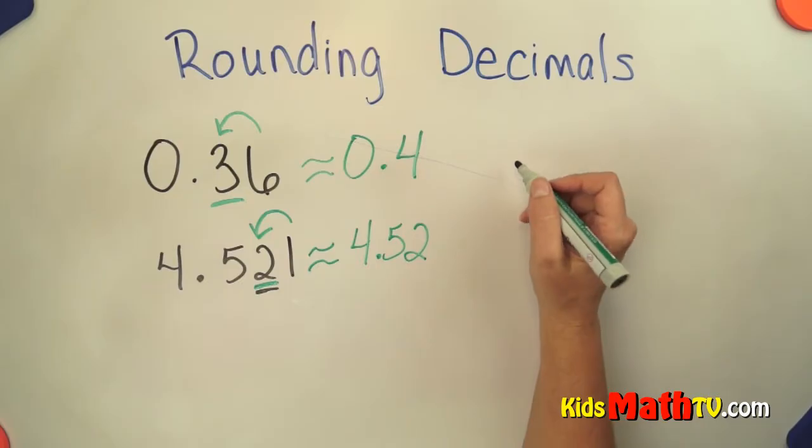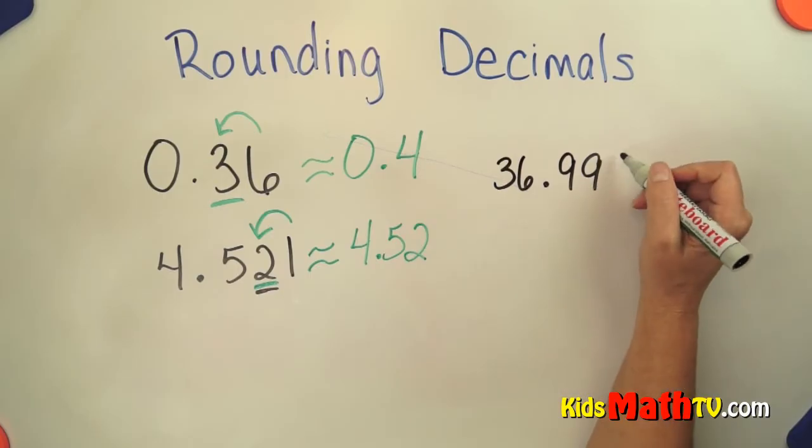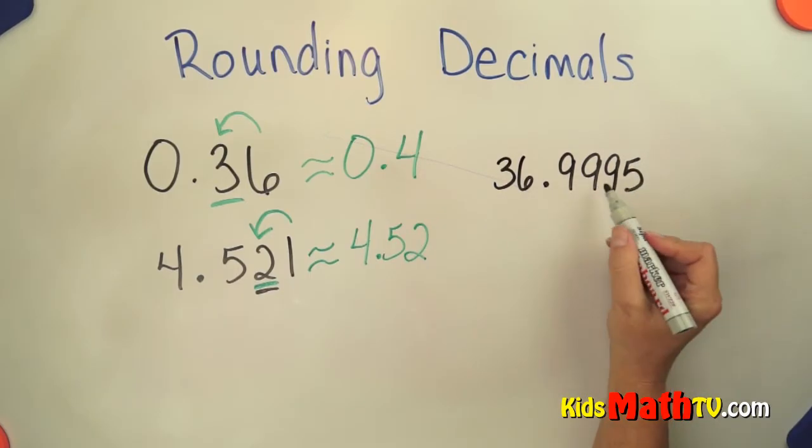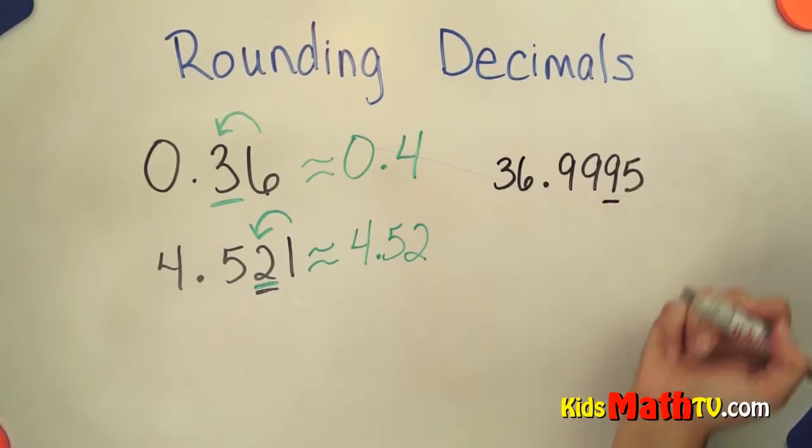How about one more? How about 36 and 9,995 ten thousandths. We are going to round to the thousandths place.